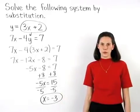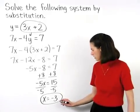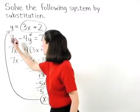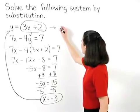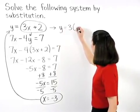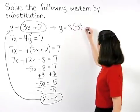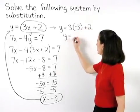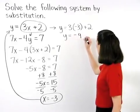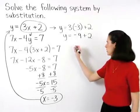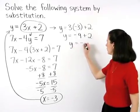To solve for y, we plug a negative 3 back in for the x in our first equation. And we have y equals 3 times negative 3 plus 2, which simplifies to y equals negative 9 plus 2, or y equals negative 7.